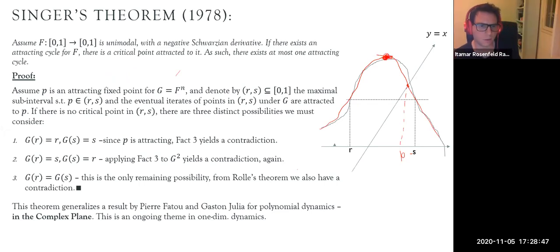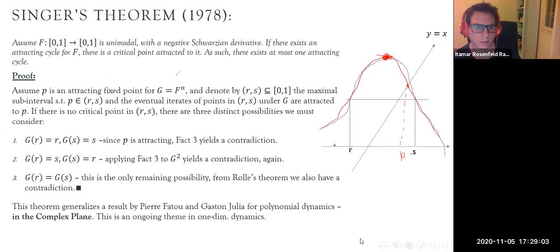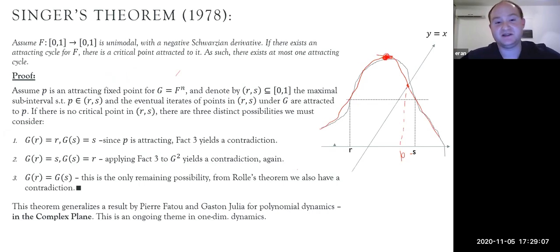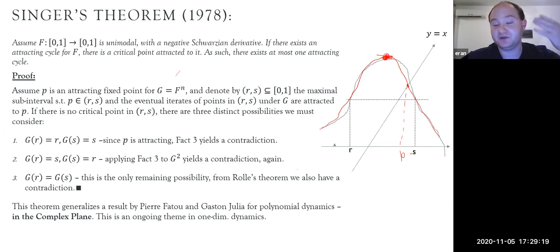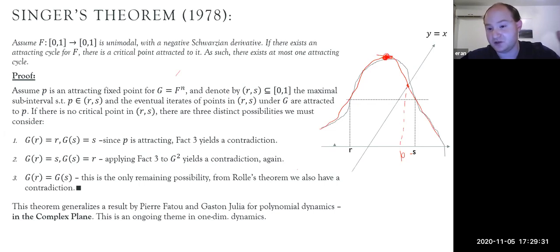Q&A: Why do we care that a critical point is attracted to a cycle? For polynomials, it allows us to give an upper bound on the number of attracting cycles — for example, a degree-four polynomial may have at most three attracting cycles. In the unimodal or multimodal case, since there are finitely many critical points, knowing that every attracting cycle attracts a critical point again gives an upper bound on the number of attracting cycles.